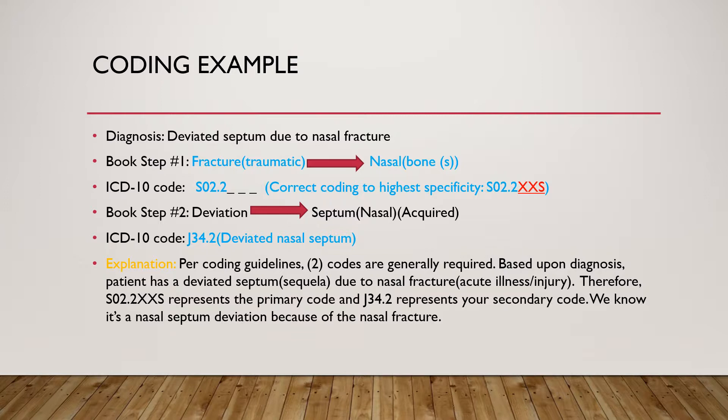Per the coding guidelines, two codes are required for this particular encounter. Based upon our patient's diagnosis, the patient has been diagnosed with a deviated septum, which is our sequela — because this is the result of the nasal fracture — which is the acute illness or injury.